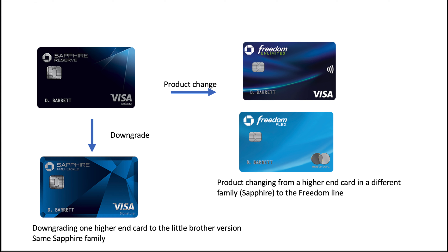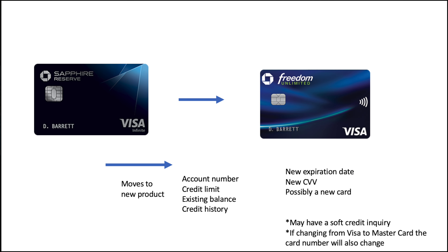Or you could product change the Sapphire Reserve card into one of the Chase Freedom cards — the Freedom Flex or the Freedom Unlimited. This accomplishes your goal of either lowering or eliminating your annual fee while not canceling the card, not killing that credit history or credit utilization. When you product change or downgrade, nothing really changes other than the card and its benefits itself. More than likely, you're going to have the same credit card number.